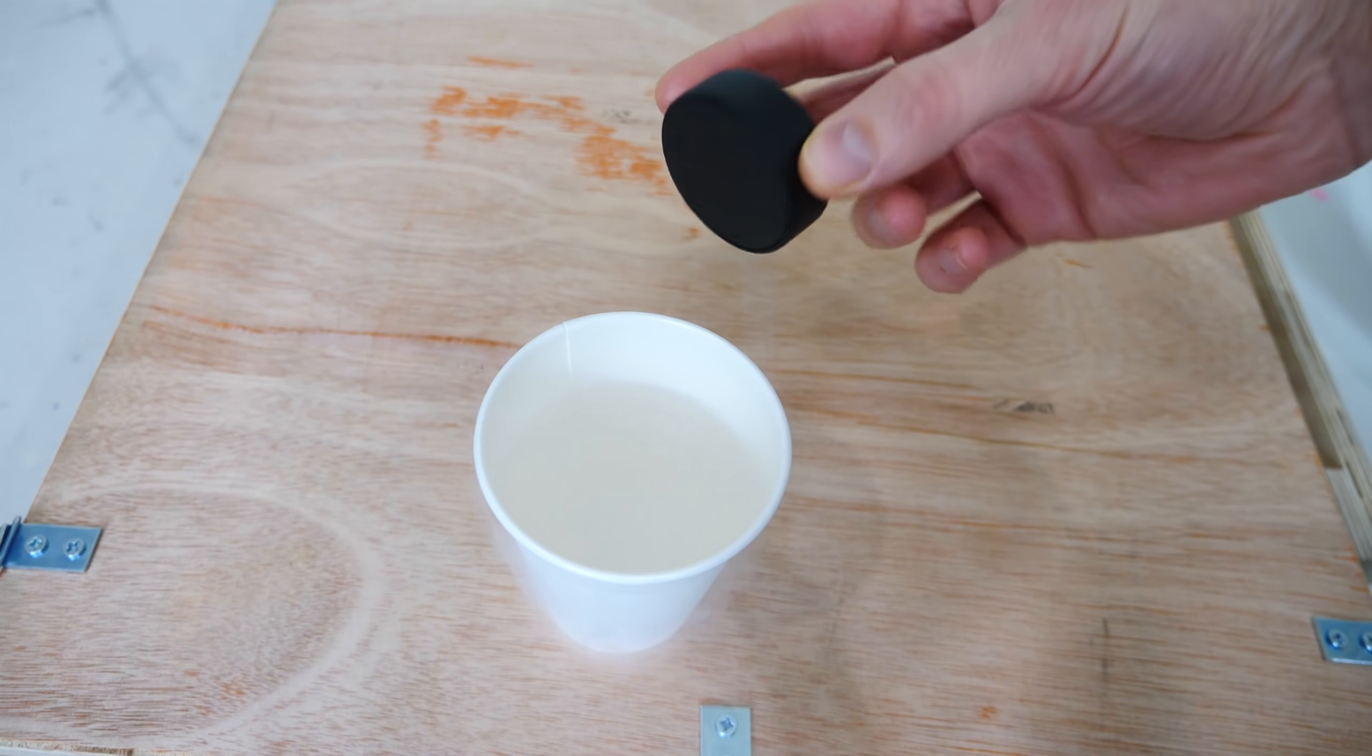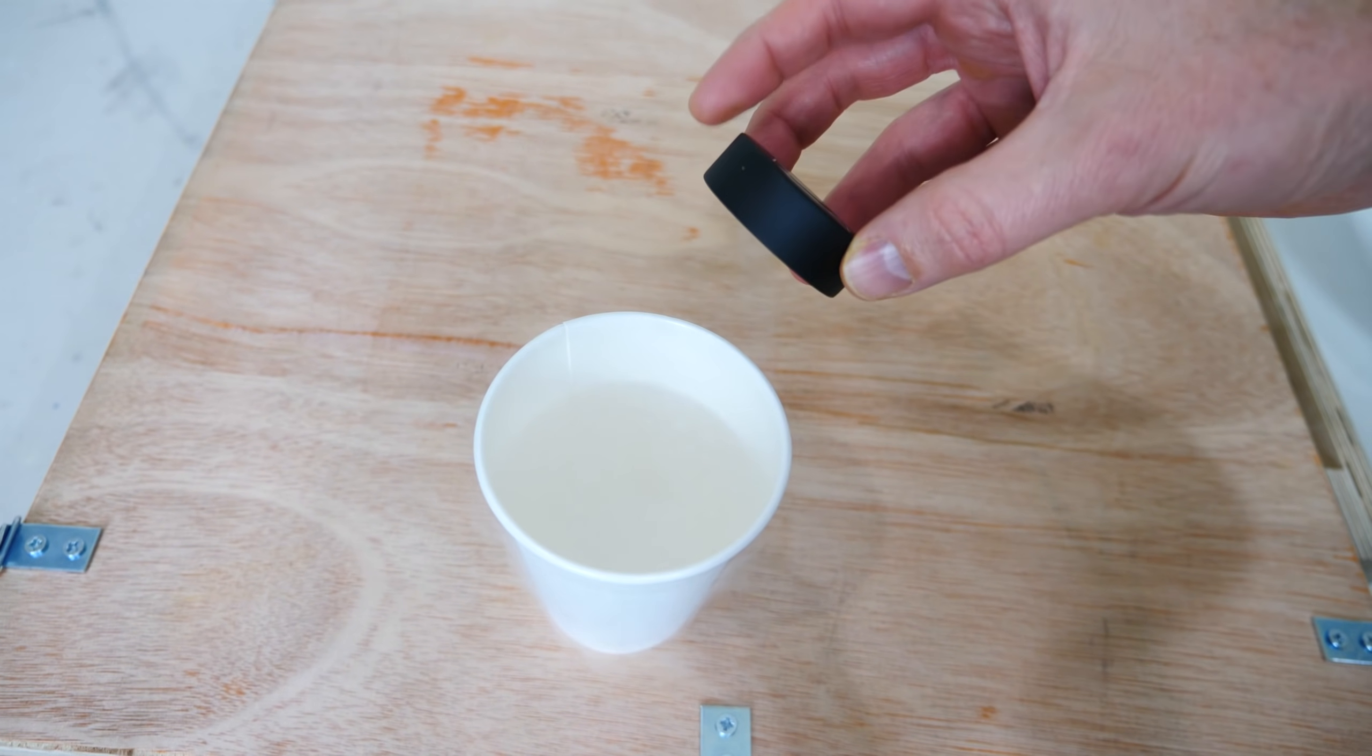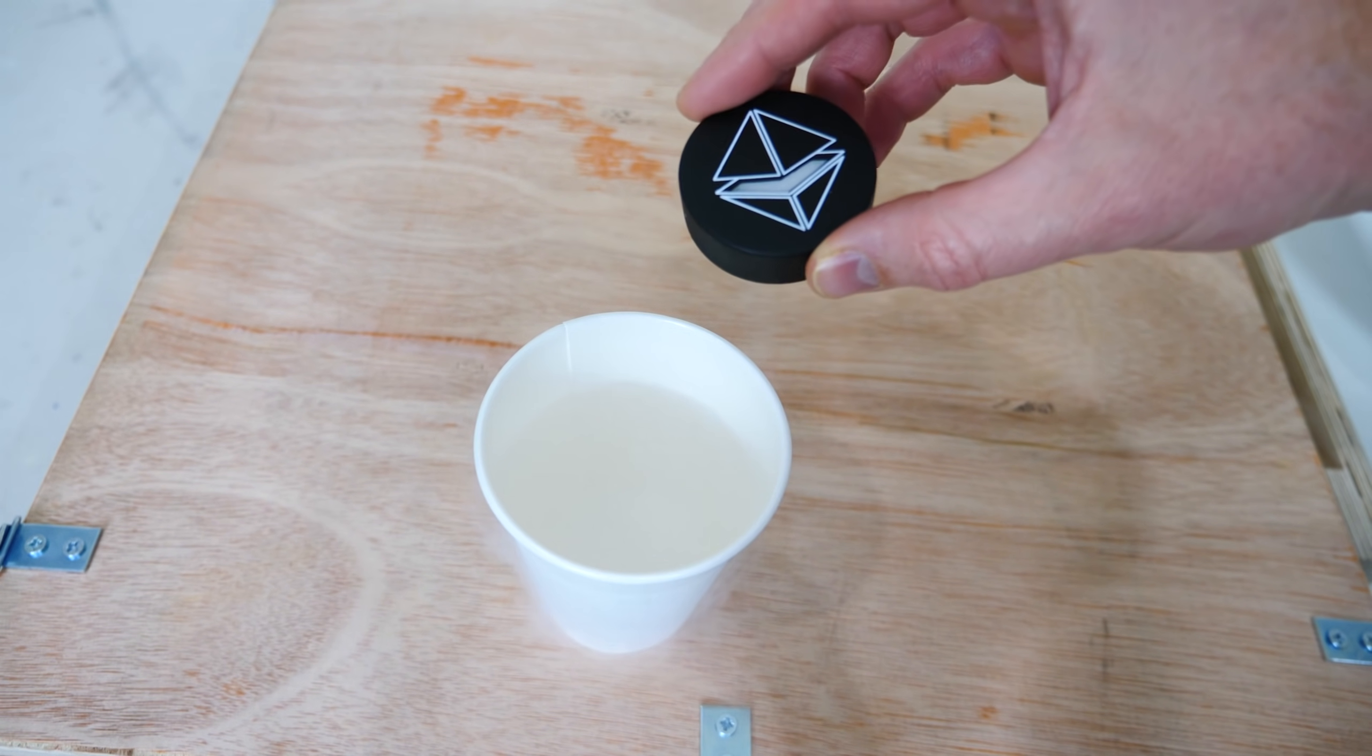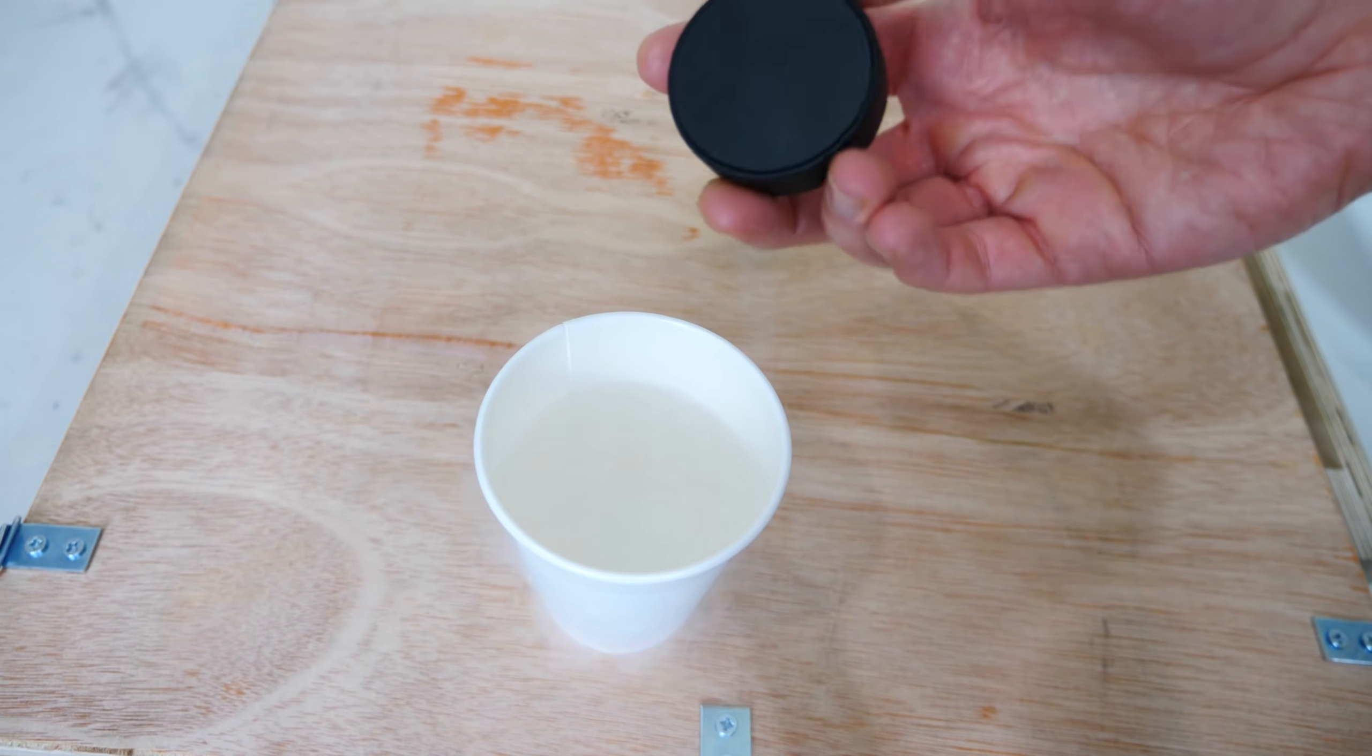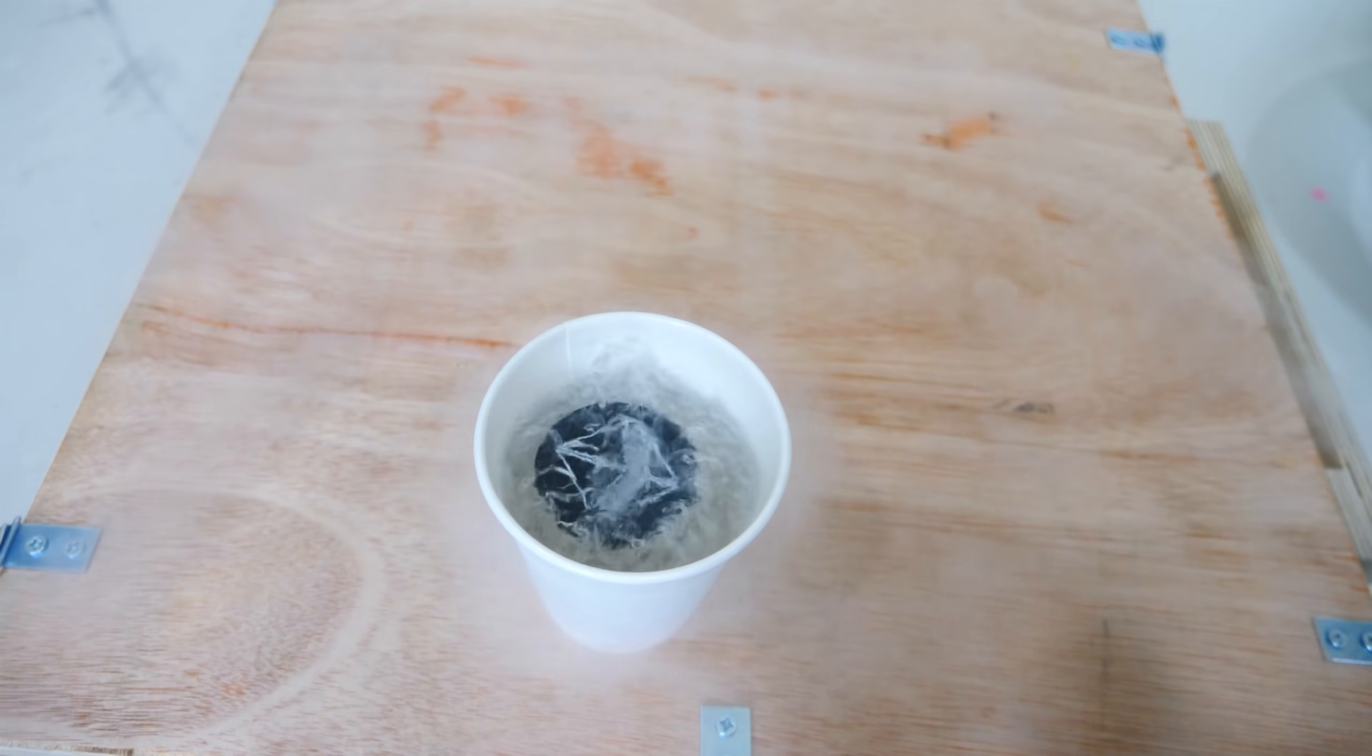So I have here a ceramic with the acronym YBCO. It has yttrium, barium, copper, and oxygen in it. Now this is a type two superconductor, and what that means is that it can actually undergo quantum locking. So what's quantum locking, you ask? Well, let me show you.